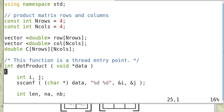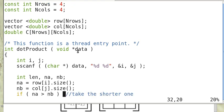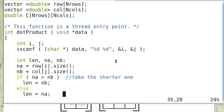So this is our thread dotProduct. So we pass in the data from the main program and we extract the value i and j from data using sscanf. So (i,j) is the row i of A and column j of B.